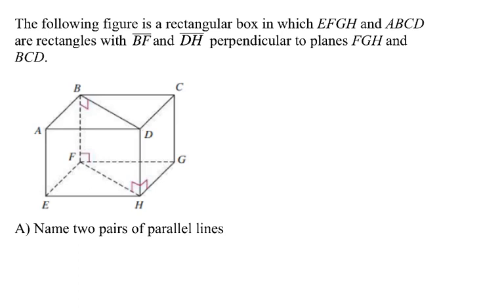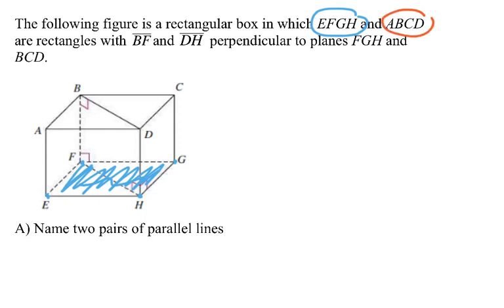The following figure is a rectangular box in which EFGH and ABCD are rectangles. EFGH is referring to the geometric structure whose vertices are E, F, G, H — essentially the rectangle that forms the bottom of this box. Finding points A, B, C, D, we're talking about the geometric rectangle that forms the top of that box. So we're saying that those are rectangles.